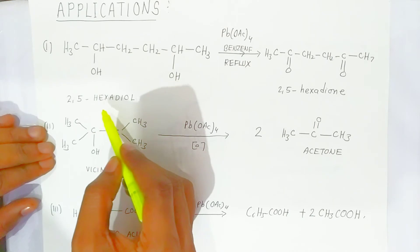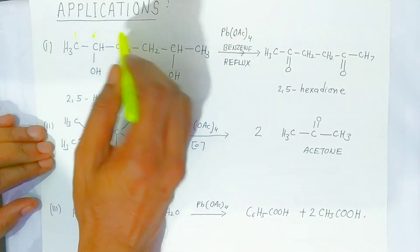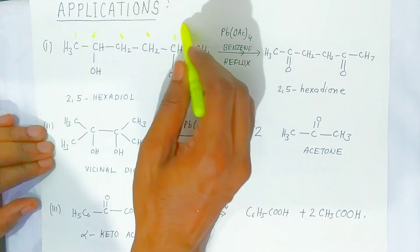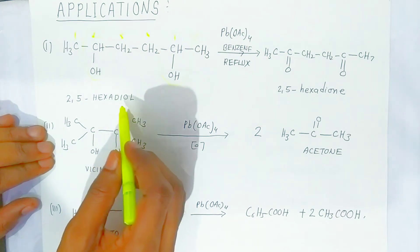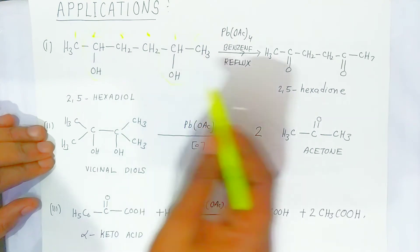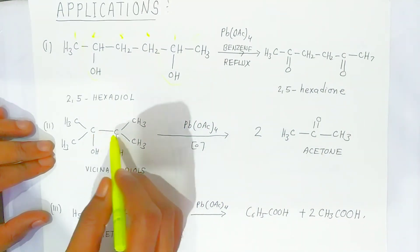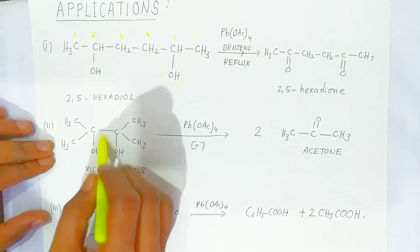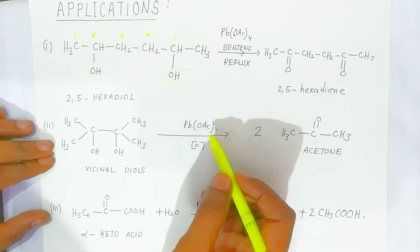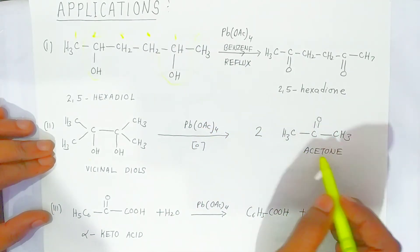This is 2,5-hexadiol — at carbon numbers 2 and 5, you have hydroxyl groups. It is converted into 2,5-hexanedione — the alcoholic group is converted into ketone. Also, when you have a hydroxyl group on adjacent carbons, we call it a vicinal diol. This vicinal diol, when oxidized in the presence of lead tetraacetate, is converted into acetone — giving two molecules of ketone.